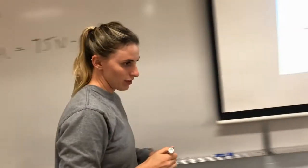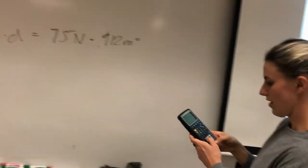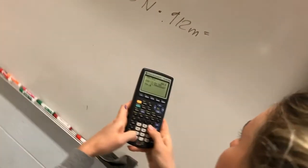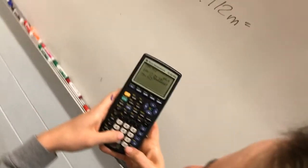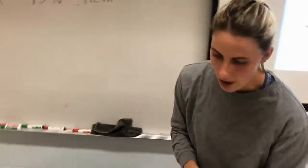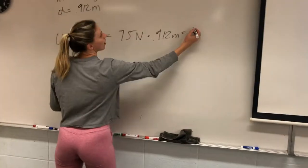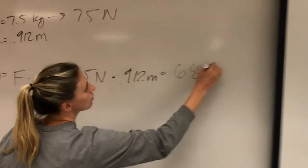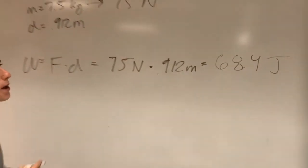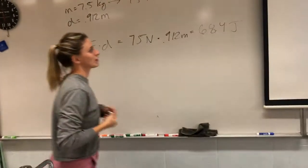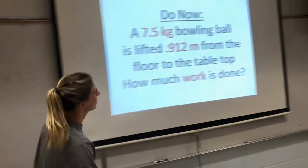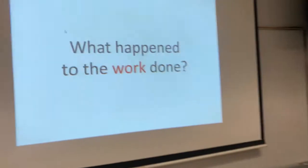Okay. Now I plug this into my calculator. 75 times 0.912 and I get 68.4 joules. Boom. How much work is done? This much work. Easy.